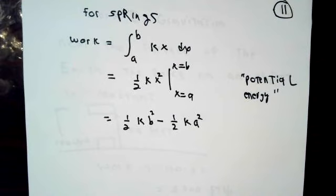If you don't know about that stuff, don't worry because it doesn't matter. The work needed is 1 half k b squared minus 1 half k a squared.